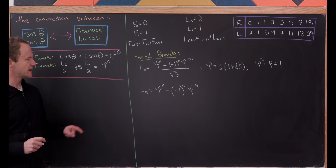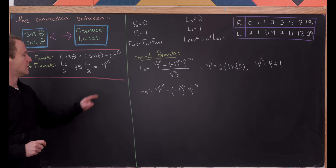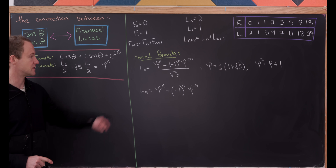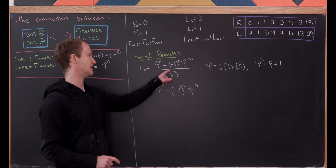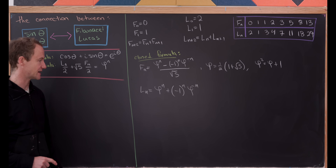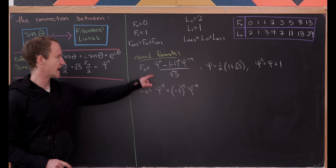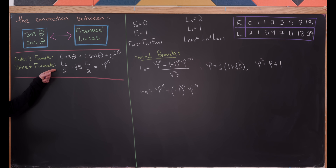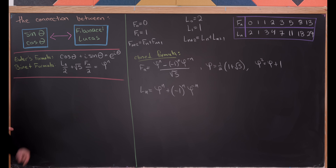If we clear the denominator on the Fibonacci number and add it to the Lucas number, the (−1)ⁿ φ⁻ⁿ terms cancel because they're attached to opposite signs, and we end up with twice φⁿ. Dividing both sides by two gives us this Binet formula — our Euler's formula analog for Lucas and Fibonacci numbers, and our first tie together of these two ideas.